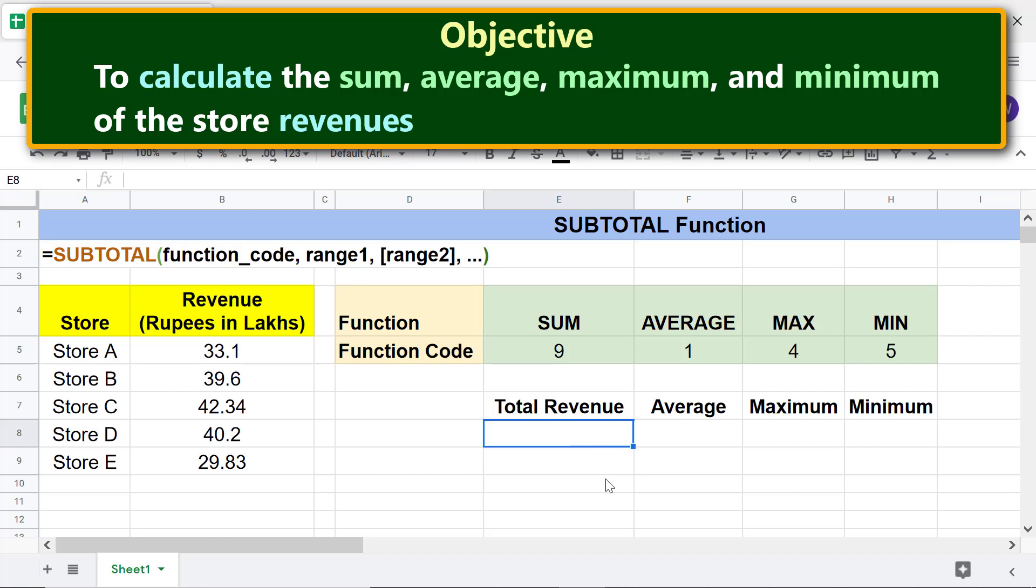First, type equal to S-U-B. Select Subtotal.